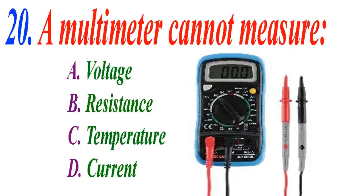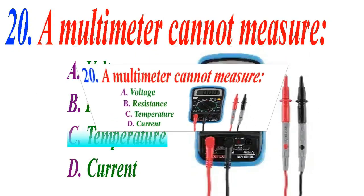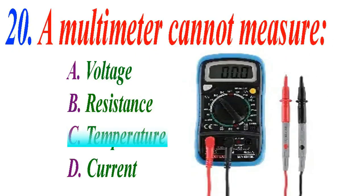A multimeter cannot measure: A voltage, B resistance, C temperature, D current. The correct answer is C temperature.